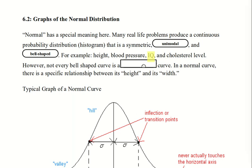However, not every bell-shaped curve is a normal curve. Just looking at something that has one peak and is symmetric isn't enough. We're going to talk about the tests for a normal curve at the end of the chapter. In a normal curve, there is a specific relationship between its height and its width.